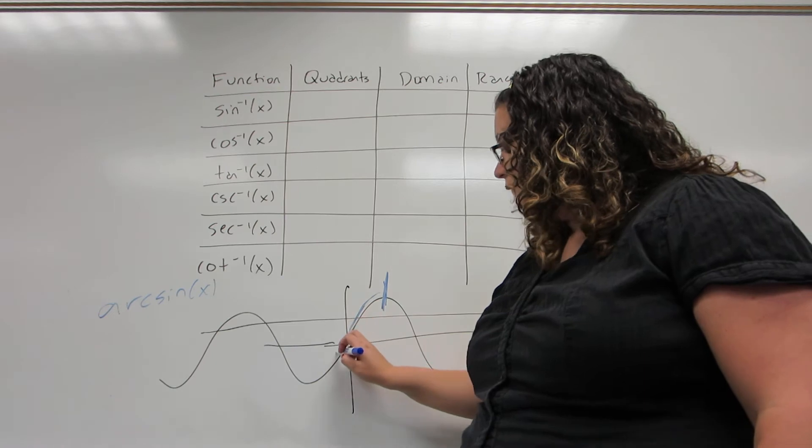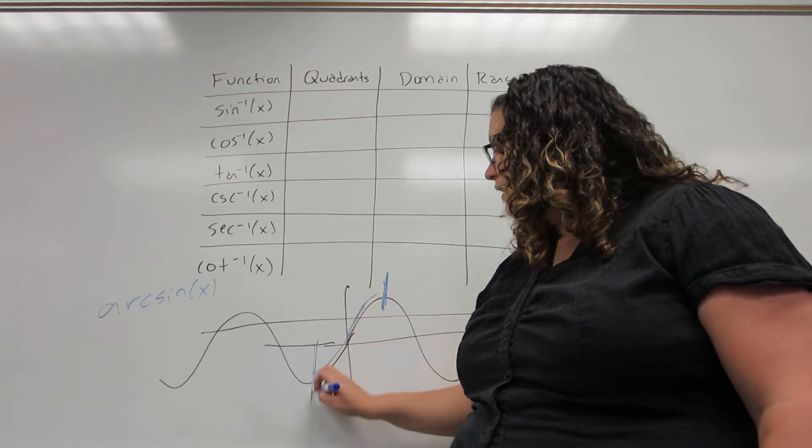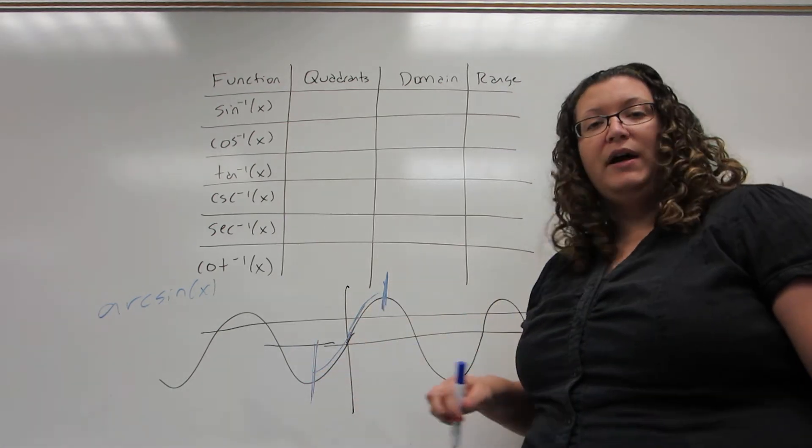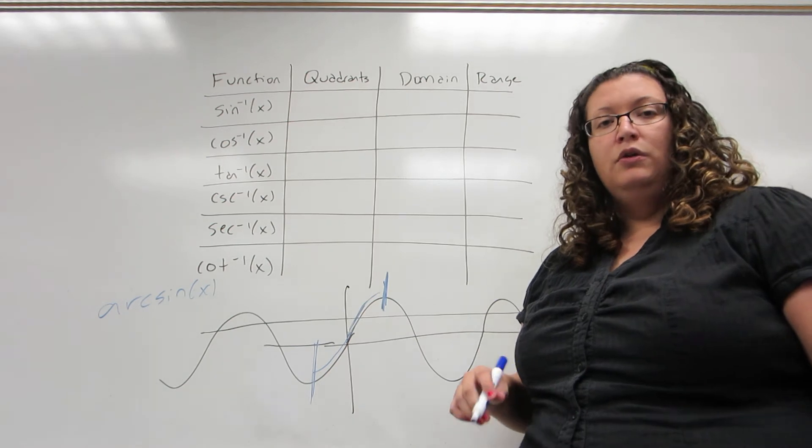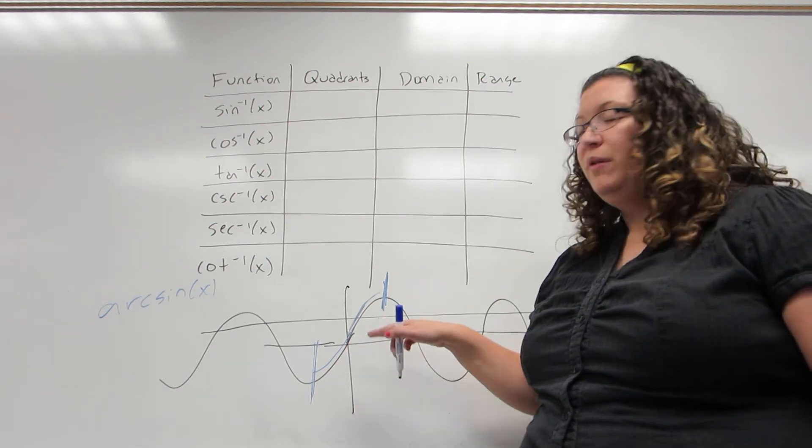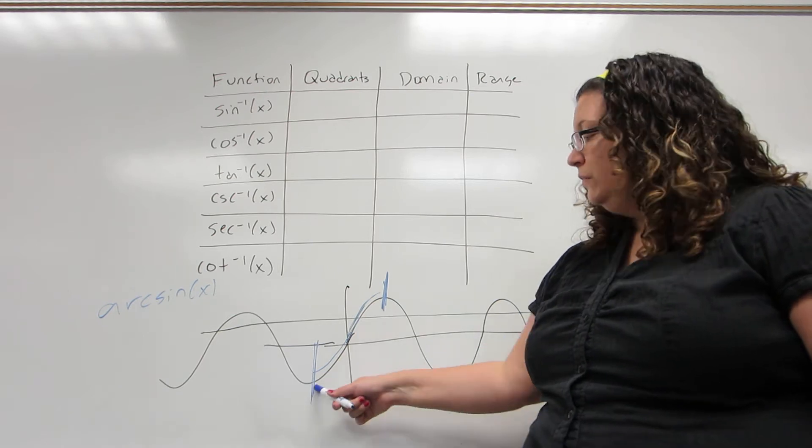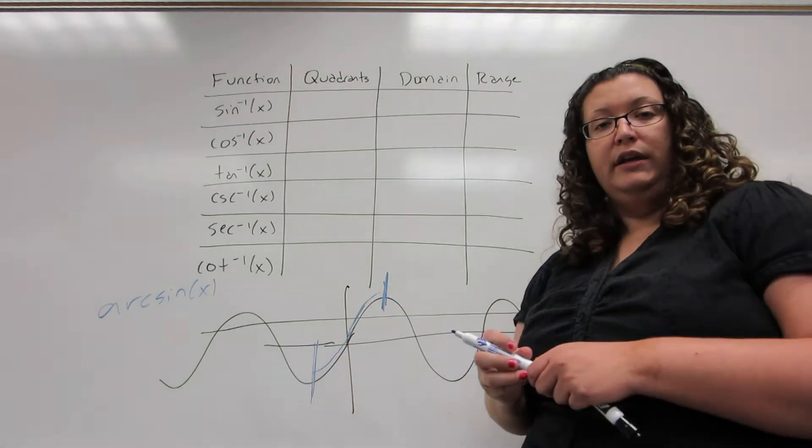And then we're going to go to the left of the origin as far as I can, so where it still passes a horizontal line test. So when we restrict the domain of sine in order to define sine inverse, this is going to be the domain we're looking at.